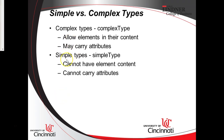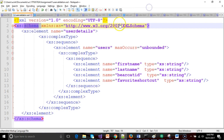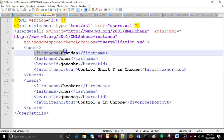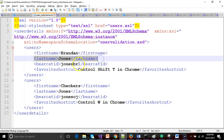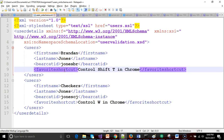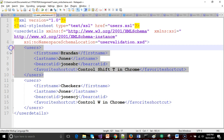A simple type is easiest to describe. It only has text between the open and closed tags — it will not have other elements inside it. It can have attributes, but no child elements. A complex type can have elements in its content and may also have attributes. For example, in our user XML, first name, last name, Bearcat ID, and favorite shortcut are all simple types.